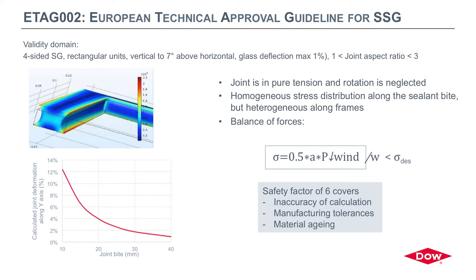For example, they said the wind load was low and the deflection of the glass pane as well. The joint was assumed to work mainly in tension and rotation was neglected, because of course there's always a little deflection, but they decided not to take this into account. They assumed a homogeneous stress distribution along the bite, whilst along the frames it was heterogeneous. They also assumed the joints would stay with an aspect ratio between 1 and 3, because it was known that the movement capacity of such joint geometries is good enough to accommodate the movement.